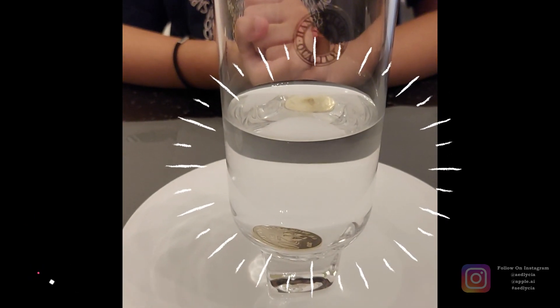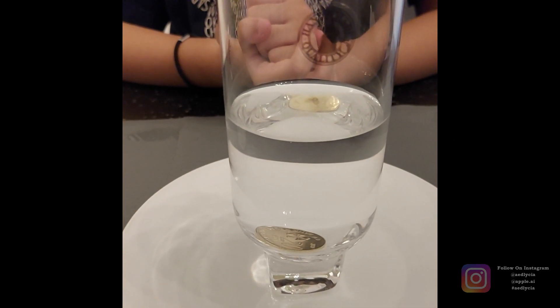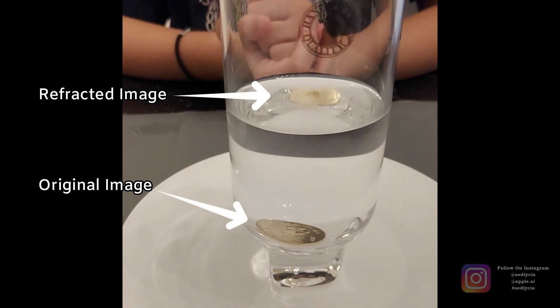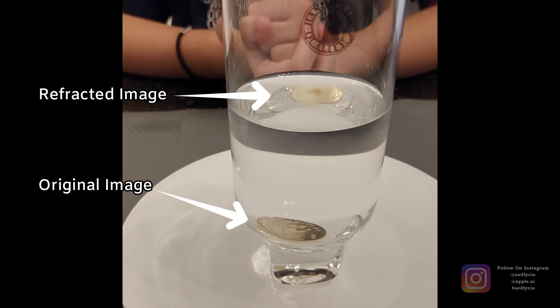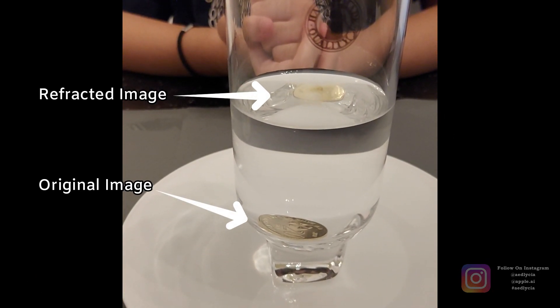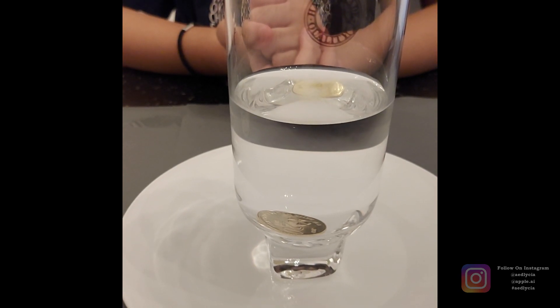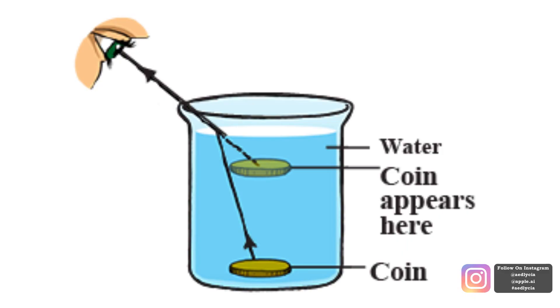You'll have to look at the glass from an angle in order to see the effect, though. If you look at it from above, below, or just straight at it, you'll only see the coin at the bottom. Here's a diagram to sum up the process. It depicts the two images of the coin, and the black arrows represent the refraction of the rays as they pass through the two mediums — air and water.